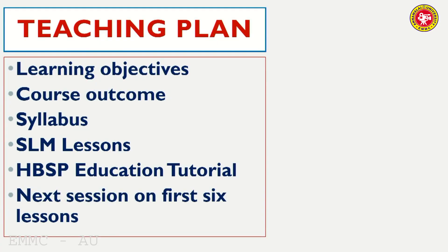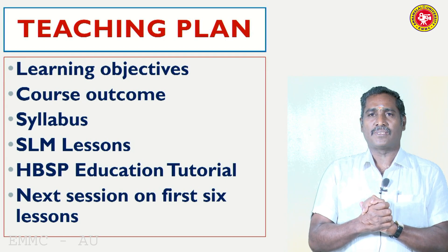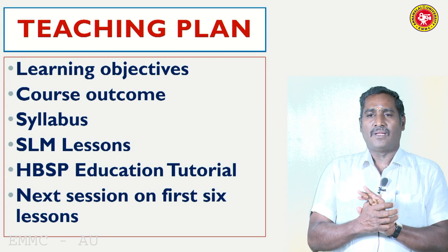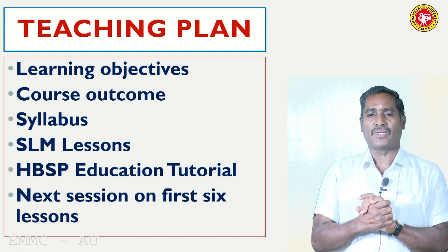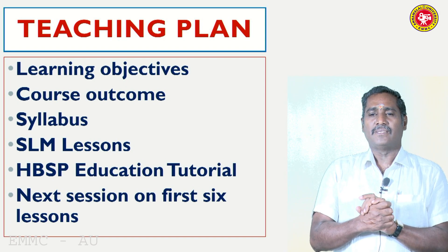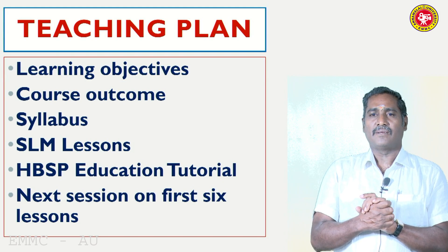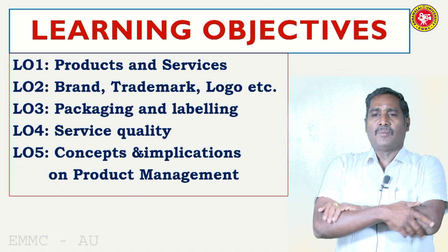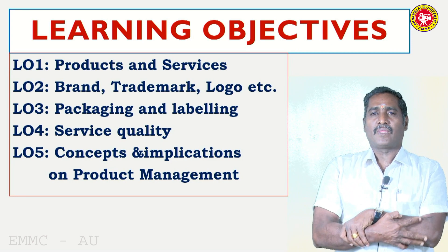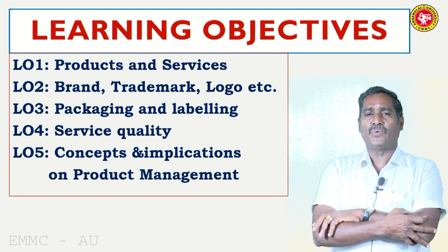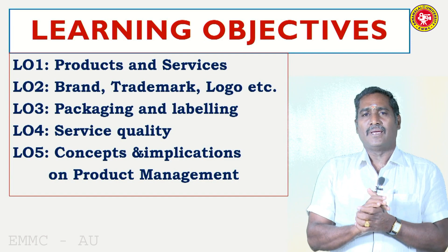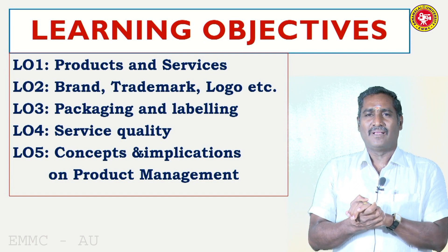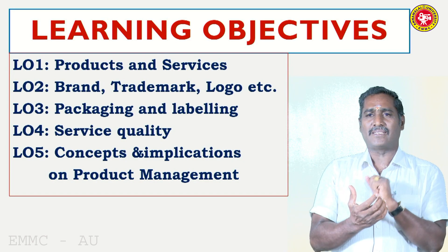The teaching plan for the course follows: learning objective, course outcome, syllabus, Harvard Business School Educational Tutorial. The first six lessons briefing will cover the first learning objective — Product and Services: how it is important, how it is made, how the offers are designed. The second objective is how do we brand or assign trademarks and logos.